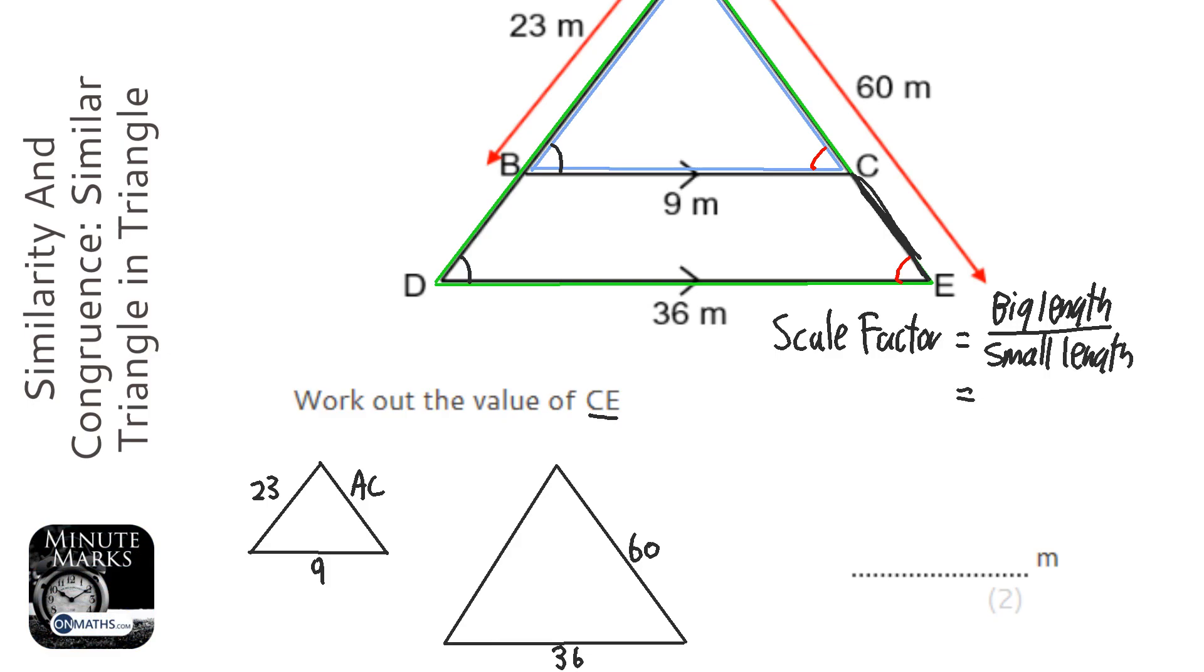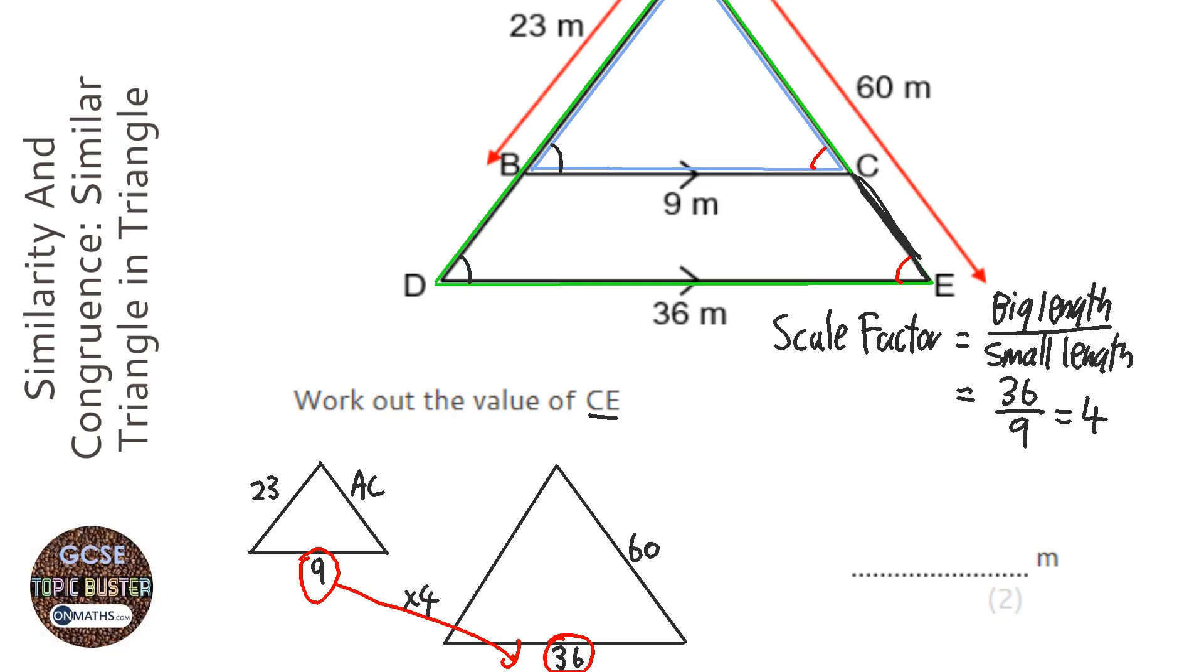So the two I'm going to pick is obviously the bottom two. We're going to find out what we times 9 by to get to 36. So 36 over 9, and that's obviously going to be 4, because 4 times 9 is 36. So we know we times that by 4, so the scale factor is 4.